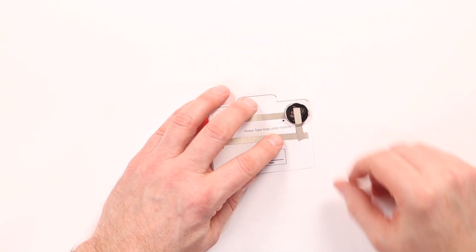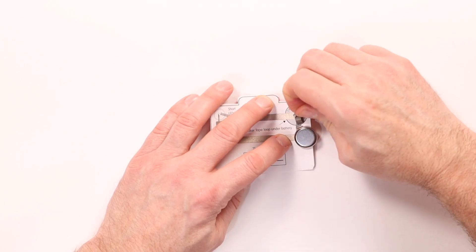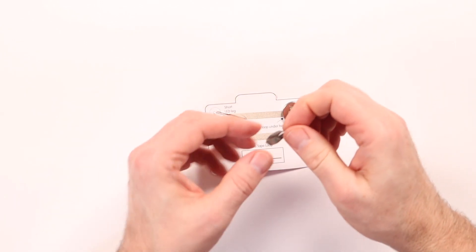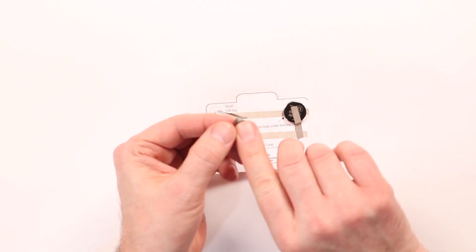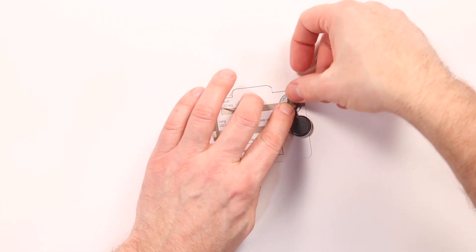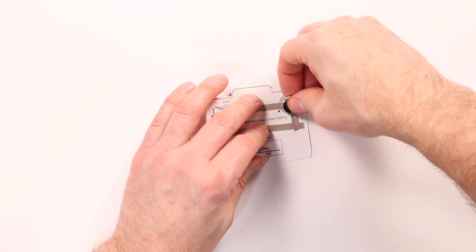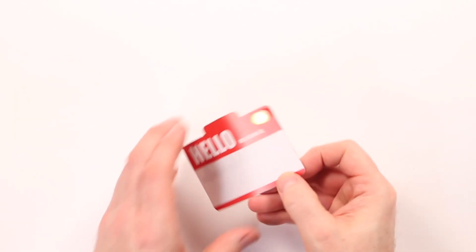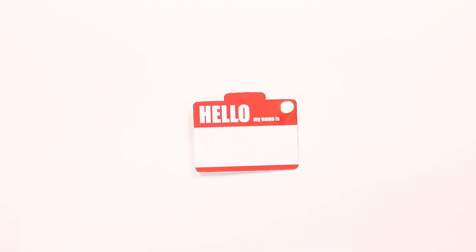We can fix this either by folding our tape loop in half so it's much smaller. And if that doesn't work, you can get a new tape loop. You want that tape loop to be about half the diameter of the battery. So now our badge lights up.